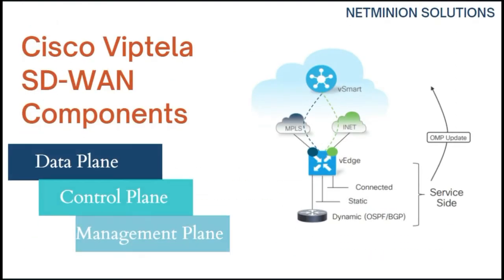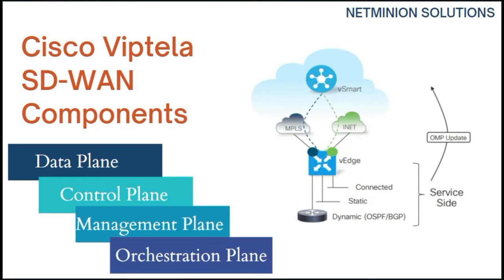In addition to the data plane and control plane, the management plane is used for management purposes. SD-WAN orchestration is a centralized administrative service providing a secure, cloud-delivered WAN control and management. It makes it possible to centrally manage multiple WAN circuits — such as MPLS, direct internet access, 4G, broadband, and LTE — making network management simpler and more efficient.